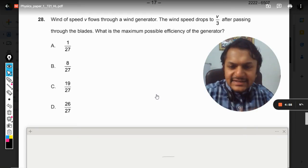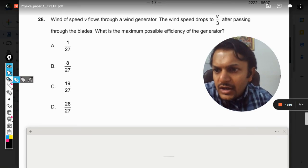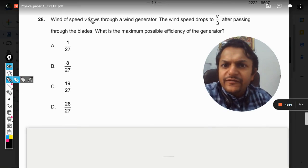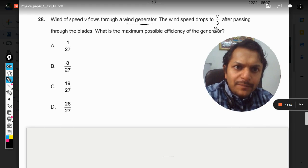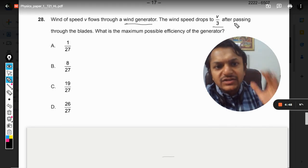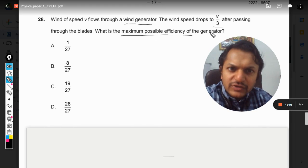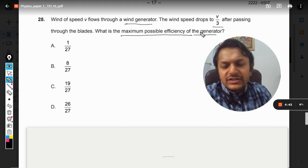Let's look at this question: wind of speed V flows through a wind generator. The wind speed drops to V/3 after passing through the blades. What is the maximum possible efficiency of the generator?